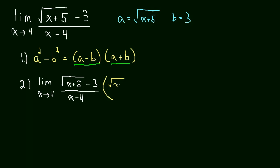So this will be multiplied by... And what was a? Well, a is square root of x plus 5, and then plus b, so plus 3. But we can only ever multiply by 1. Otherwise, we're going to change things.